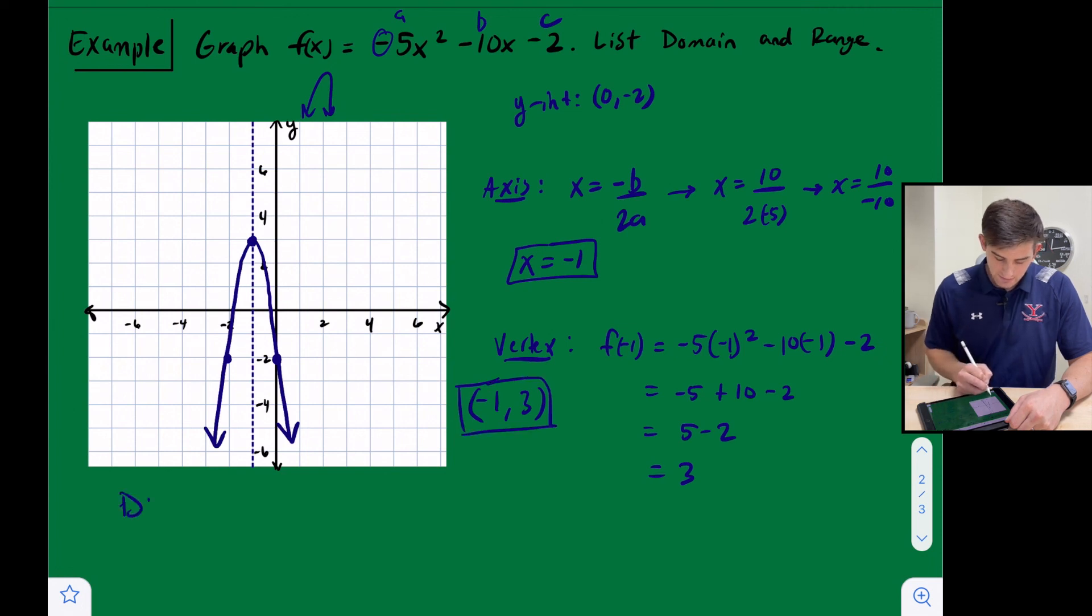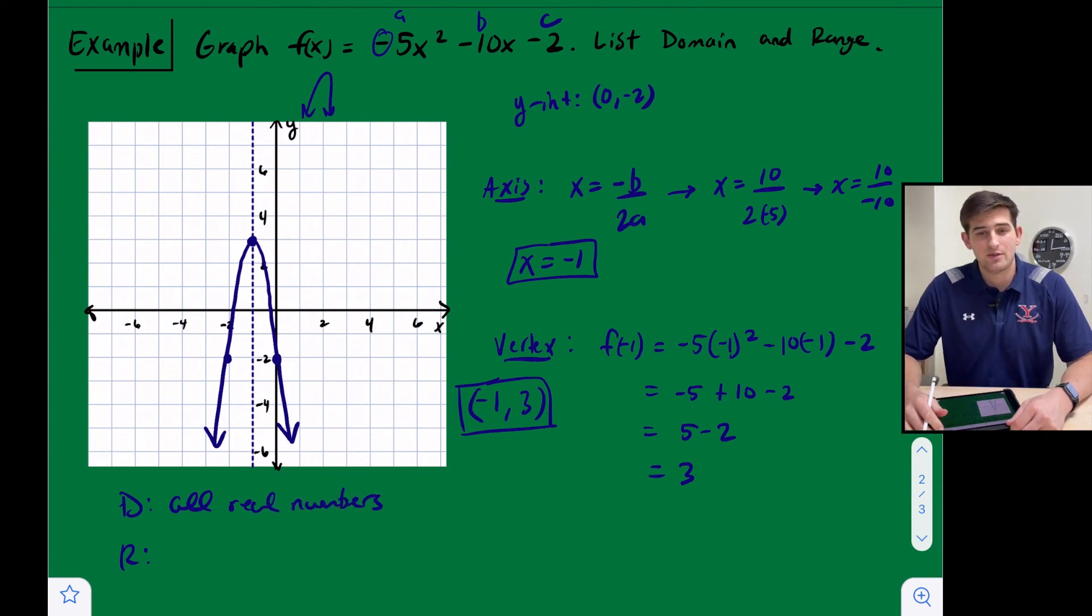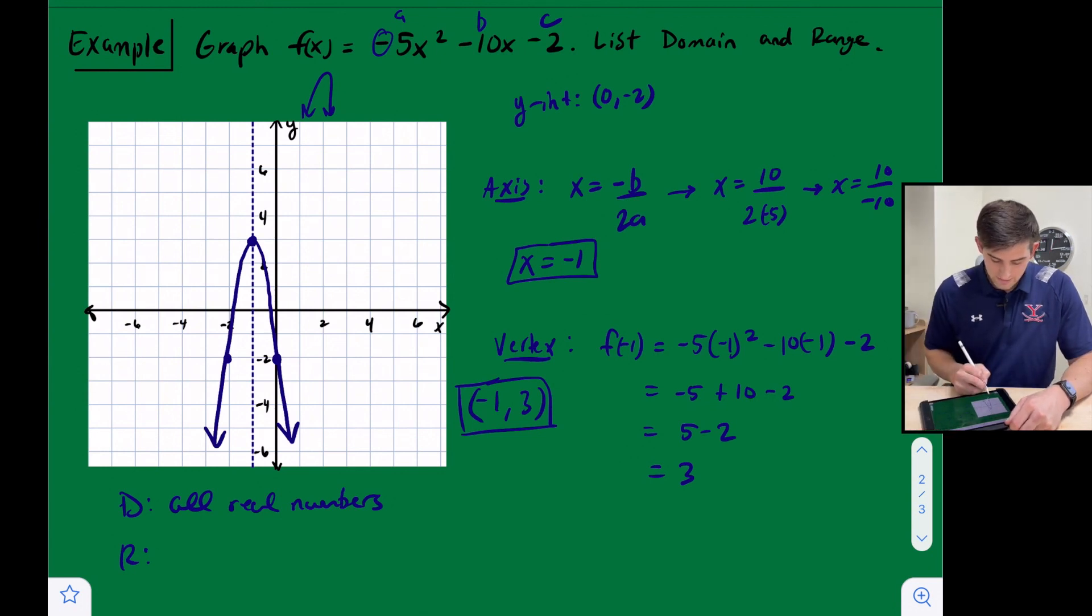And now let's list the domain and the range. Just like the previous example, our domain is all real numbers. That's going to be the case the majority of the time when you're working with parabolas, especially if they're opening up or down.